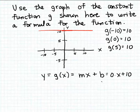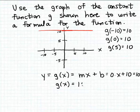We can fill that into our linear function formula and there's the result. The formula for g is very simple — it just simplifies to the constant ten. There's another reason why constant functions are called constant functions: the formula turns out to be exceedingly simple. It doesn't even involve the input variable — it's just a constant.